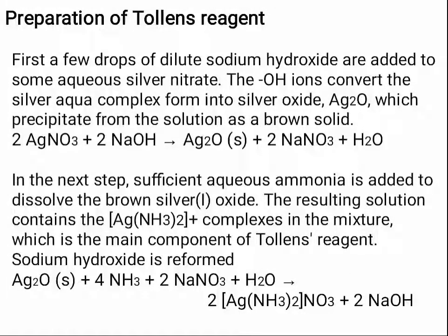Preparation of Tollens' reagent: first, a few drops of dilute sodium hydroxide are added to some aqueous silver nitrate. The hydroxide ions convert the silver aqua complex into silver oxide, Ag₂O, which precipitates from the solution as a brown solid. So you have silver nitrate, and when you add sodium hydroxide, you get silver oxide precipitating out of the solution.